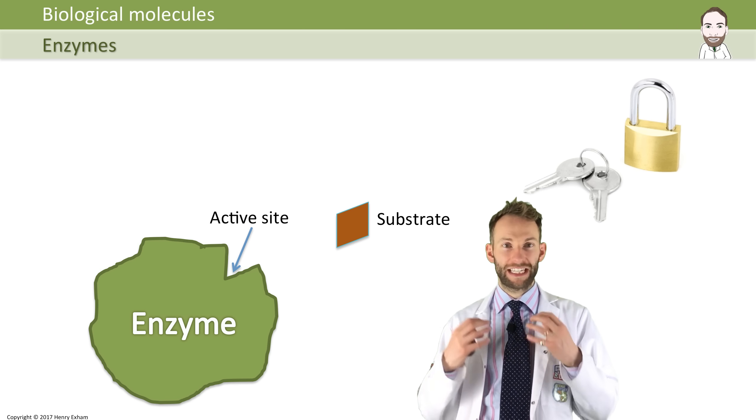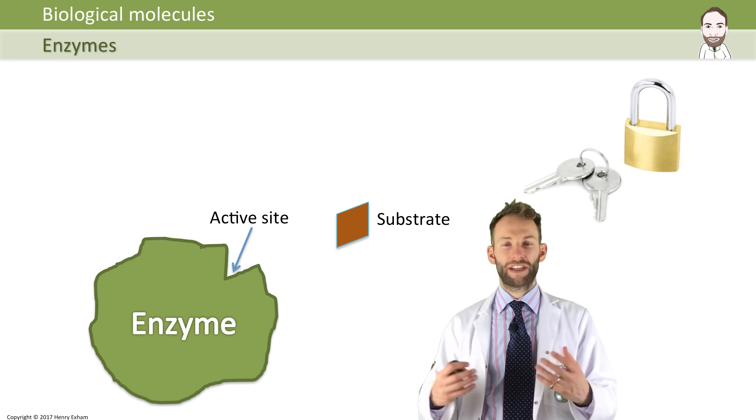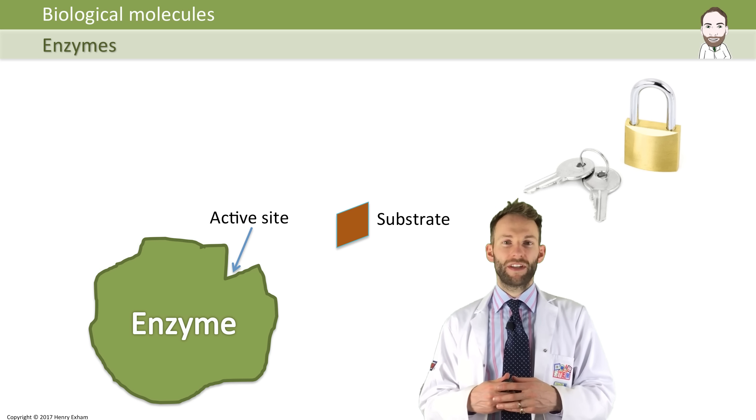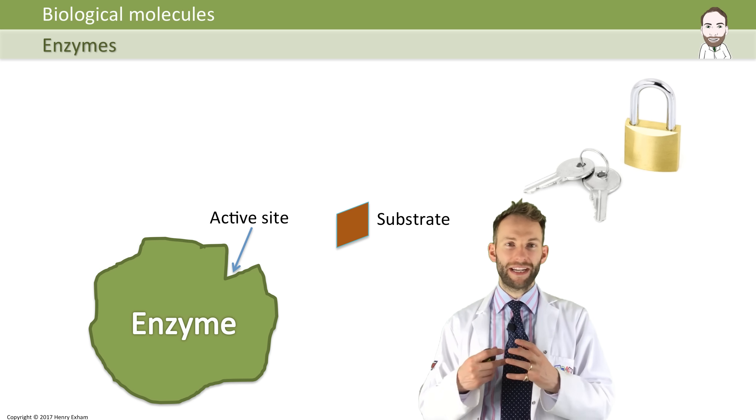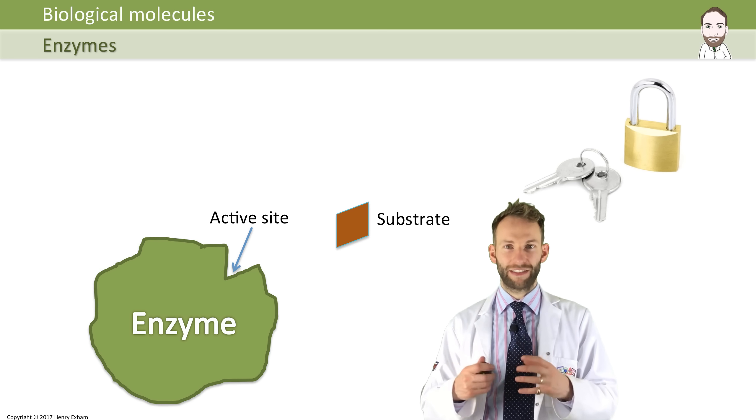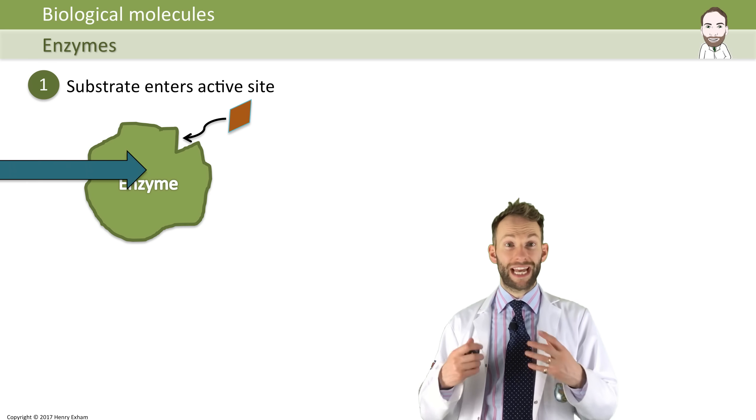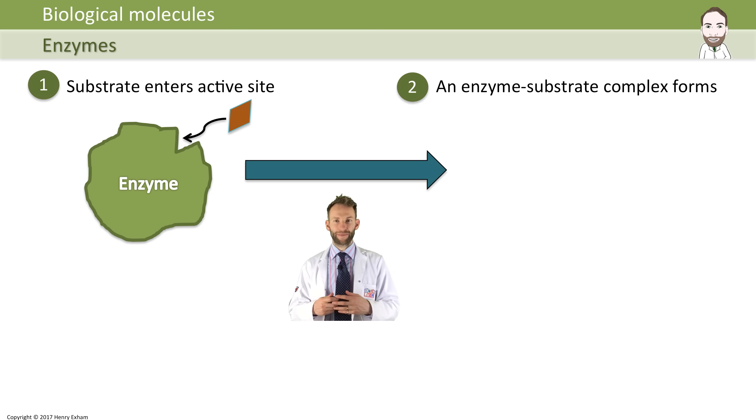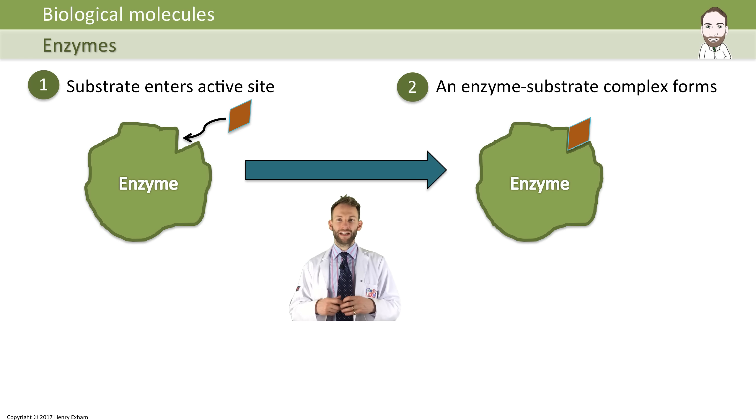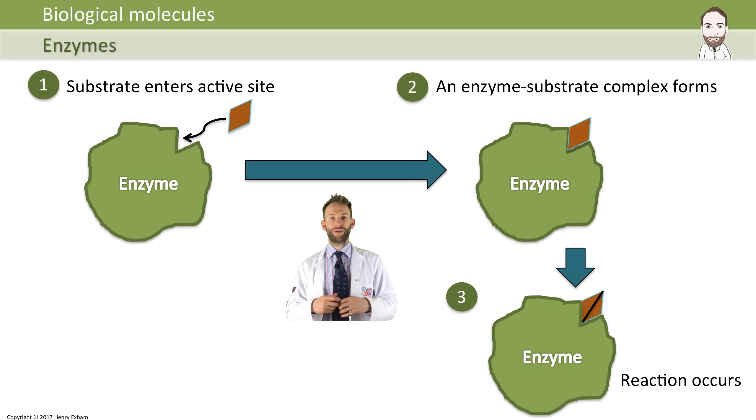You will need a particular enzyme to match a particular substrate - you need a different enzyme for every reaction that happens inside the body. The substrate and enzyme bind together using the active site and they form what we call an enzyme-substrate complex. The reaction then takes place - that might be breaking something down, a large molecule into small molecules - and the products get released.